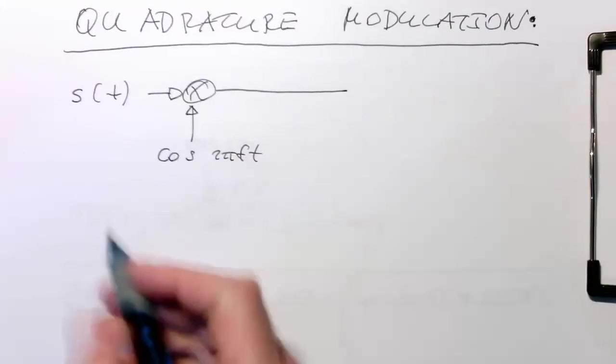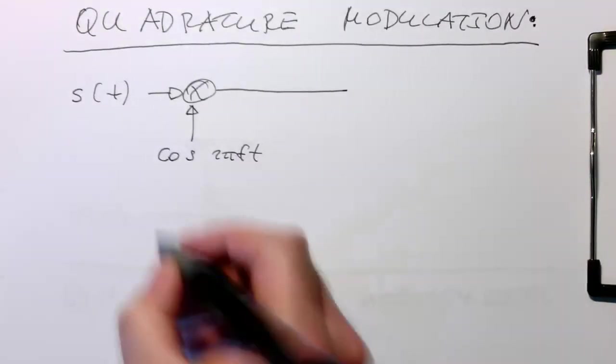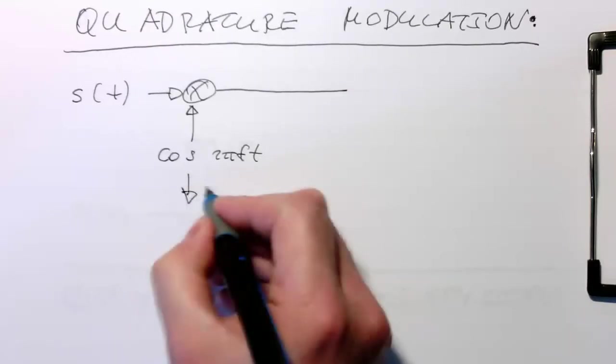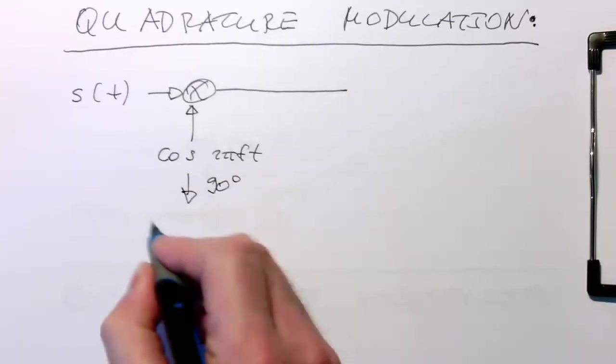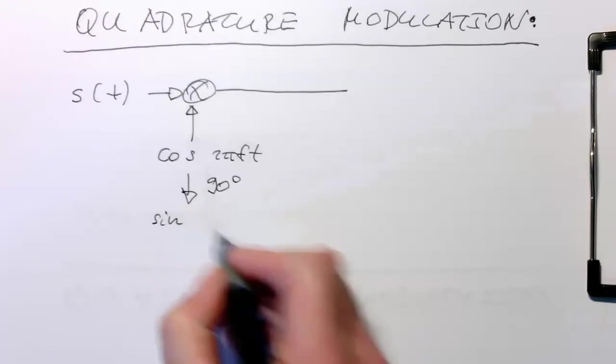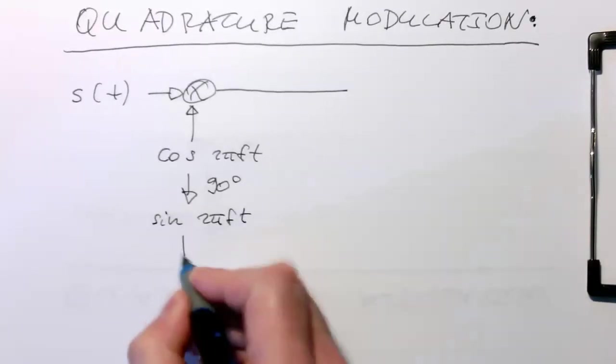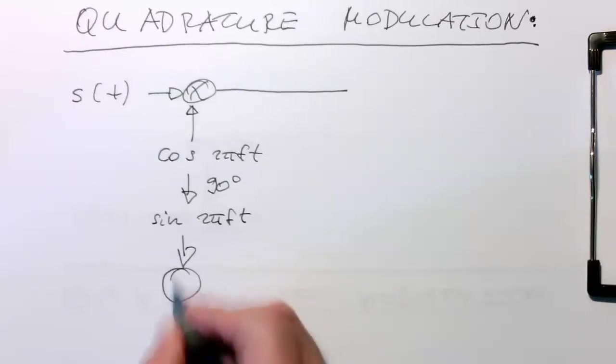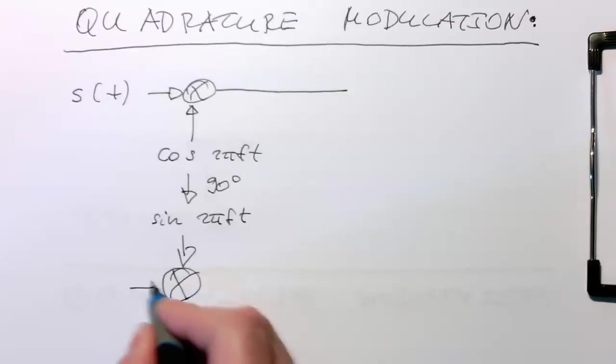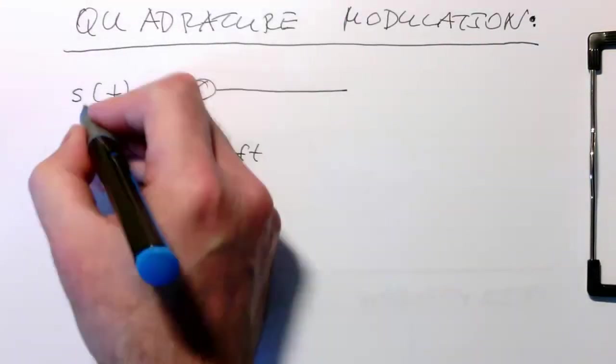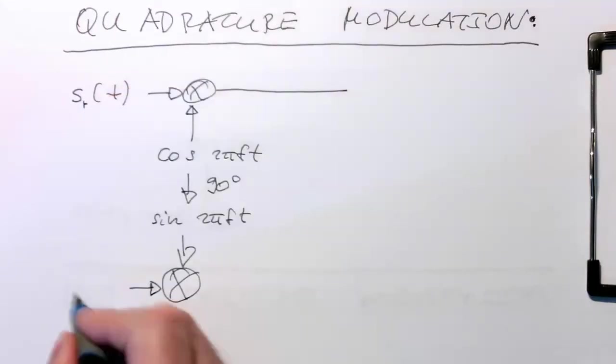And then what we can do at the same time, we can create a phase shift of 90 degrees and create a sine wave 2 pi f t. And this sine wave we can multiply with another simple stream here. So let's call this here s_r and this one here s_i of t.